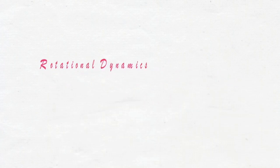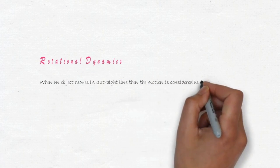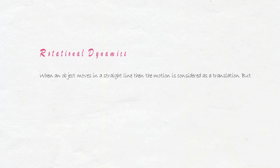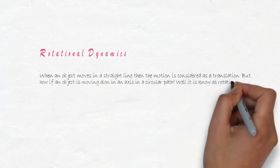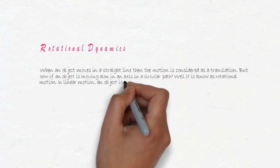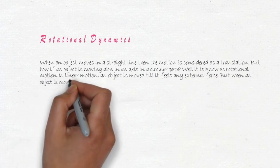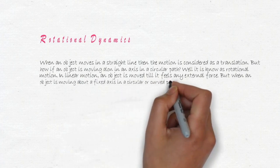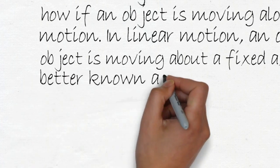Rotational dynamics. When an object moves in a straight line, then the motion is considered as a translation. But how if an object is moving along an axis in a circular path? Well, it is known as rotational motion. In linear motion, an object is moved till it feels any external force. But when an object is moving about a fixed axis in a circular or curved path, then it can also be the force, better known as a torque.